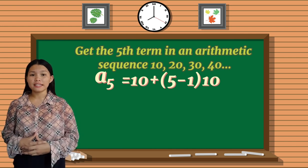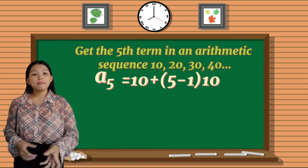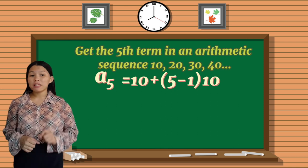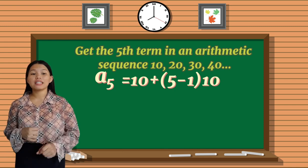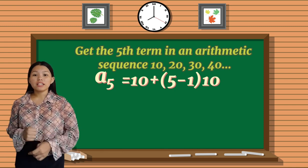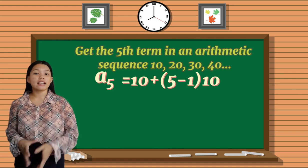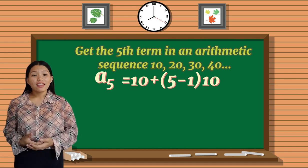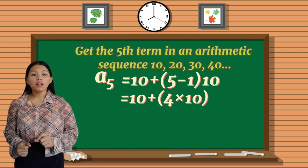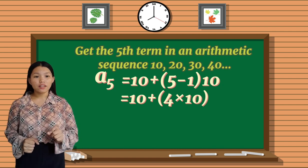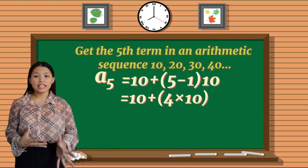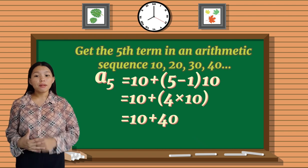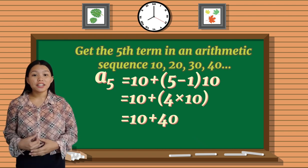So copy 10 plus 5 minus 1, so the answer for this is 4, copy the common difference, which is 10. Then copy 10 plus 4 times 10, which is 40, then add 10 plus 40, the answer is 50.